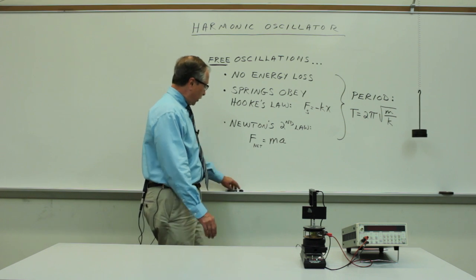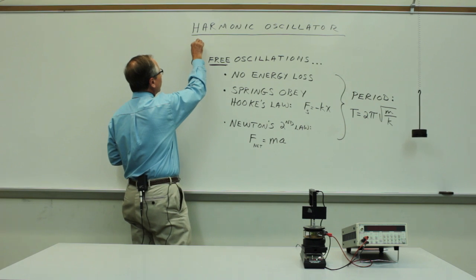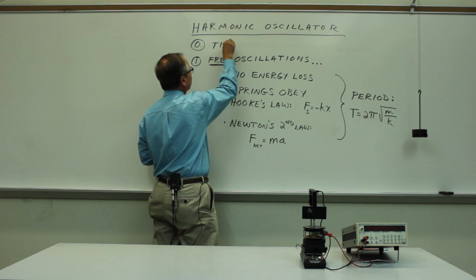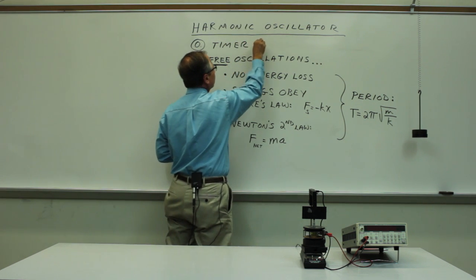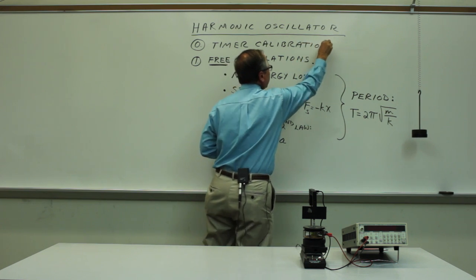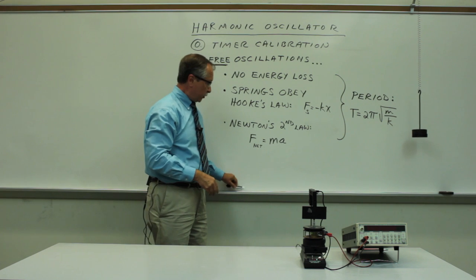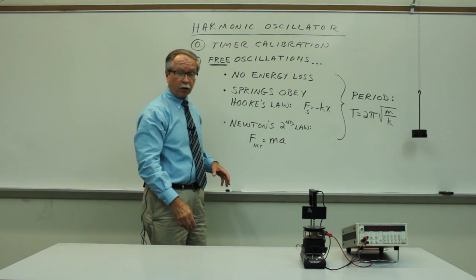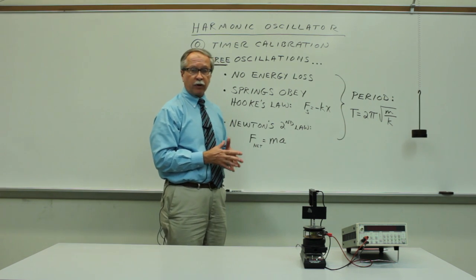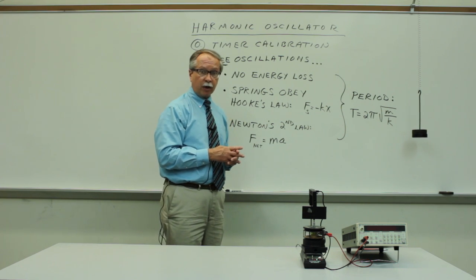We're going to add ahead of this part 1 on free oscillations, let's call this part 0, timer calibration. So we'll go through a routine that ensures that the timer that you're using is well calibrated, or if it isn't, then you'll be able to make some adjustments based on the calibration measurements to be sure that it really is giving you the right time measurement.